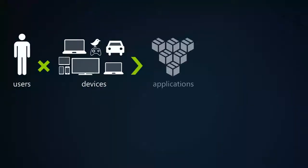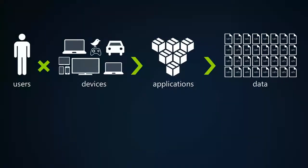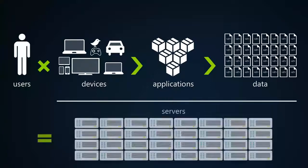The real transformation begins when applications are being delivered to these devices, all powered by continuous services. These applications themselves are using data — generating lots and lots of data, as well as reasoning on top of all of this data and powering new features of intelligence and social capabilities. The real news, of course, is that all of this transformation is being powered by servers delivering these applications.